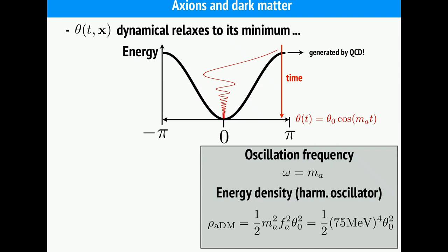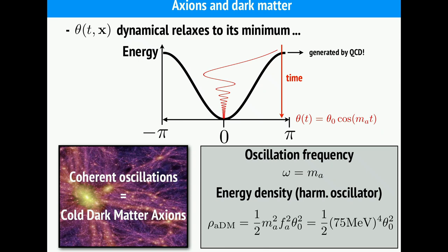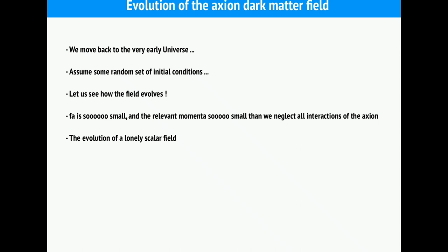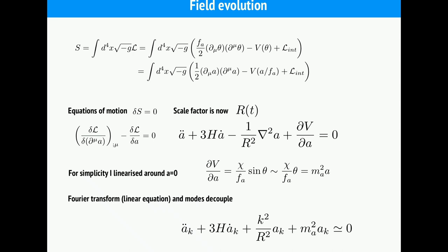Today the axion oscillations are harmonic — the amplitude is very small and any potential can be expanded as quadratic near the minimum. The curvature of the potential is given by the axion mass, so the frequency of oscillations today is exactly the axion mass. One can think of the axion field as either a classical oscillating field or as a coherent state of many particles all oscillating in phase — much like a laser is a coherent state of many photons.